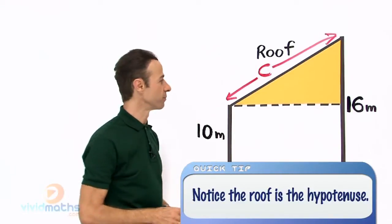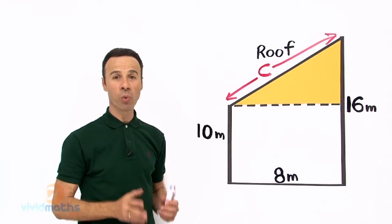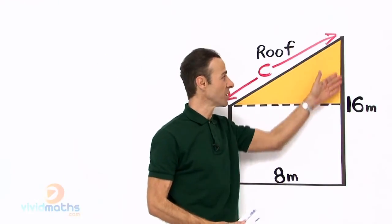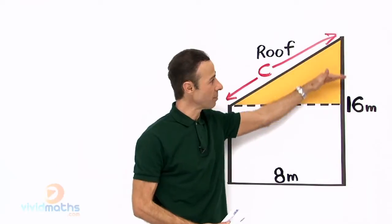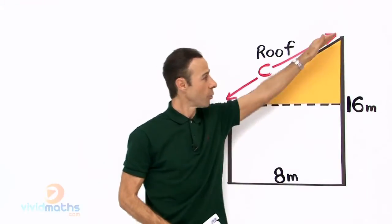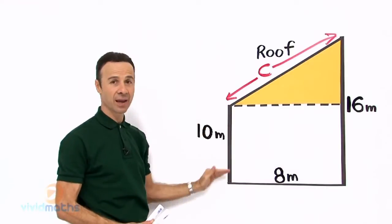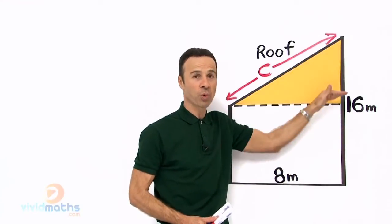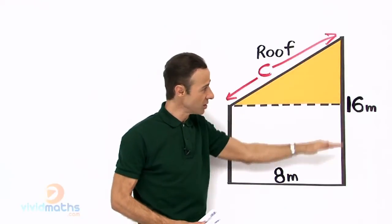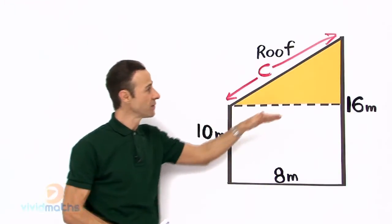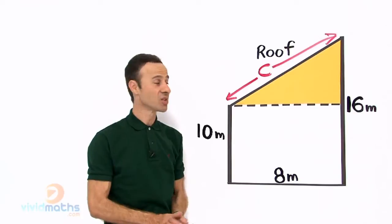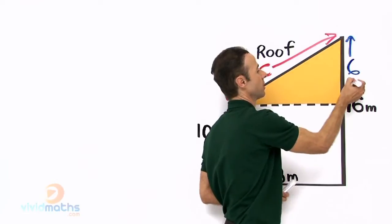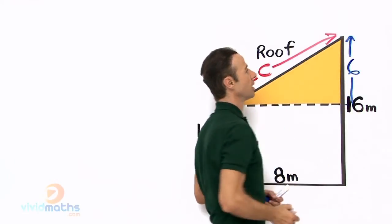Now let us have a look at what we have. Let us look at the two vertical walls — we have a vertical wall here which is 10m, and we have another vertical wall here of 16m. Now how do we find this little gap here, the yellow part height? Well, if all of this is 16 and this is 10, we just subtract 10 from 16, and that gives us the gap — the yellow part. So 16 take away 10 leaves us 6m. That height there is 6m.